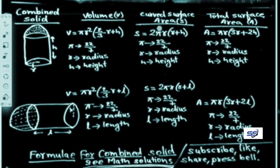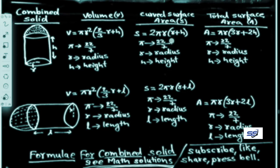The curved surface area is denoted by S: S = 2πR(R + H). In this formula, π = 22/7, R is the radius, and H is the height.